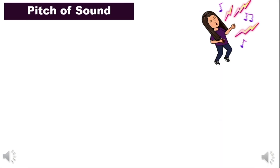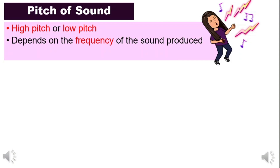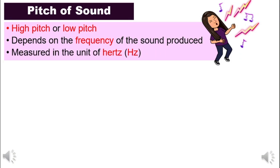How about the pitch of sound? The pitch of sound can be categorized into a high pitch or a low pitch. For pitch of sound it depends on frequency. If it is loudness, it depends on amplitude. The pitch depends on the frequency of the sound produced, and it is measured in the unit of hertz. The loudness of sound depends on amplitude and the pitch of sound depends on frequency. This is very important as a lot of exam questions relate to these two concepts.